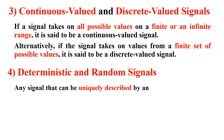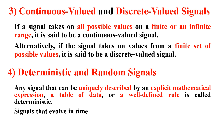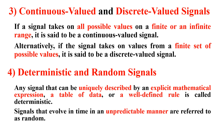Deterministic and random signals: any signal that can be uniquely described by an explicit mathematical expression, a table of data, or a well-defined rule is called a deterministic signal. Signals that evolve in time in an unpredictable manner are referred to as random signals. For example, lightning during rain is unpredictable — such signals are known as random signals.